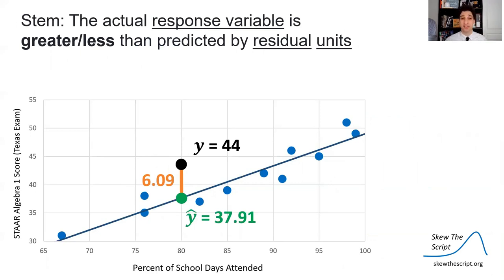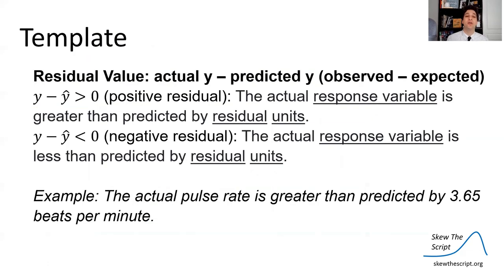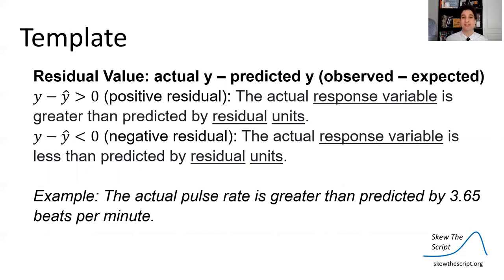When we talk about interpreting a residual, we use a standard template. In this case: the actual test score was greater than predicted by 6.09 points. There is a key facet here — it's always actual Y-value minus predicted. So when the result is positive, the actual Y-value was above predicted, meaning we under-predicted. If the residual is negative, the actual Y-value was below predicted, meaning we over-predicted.